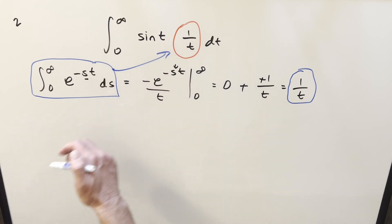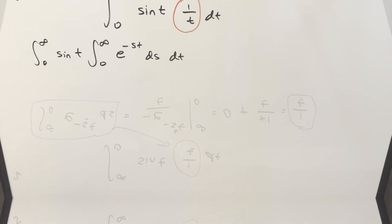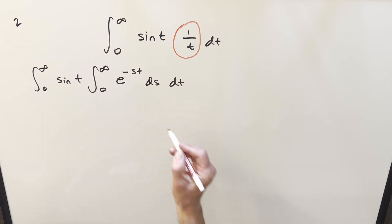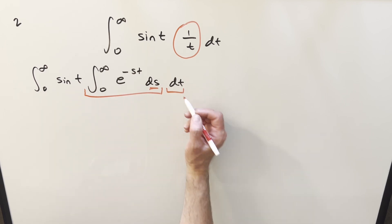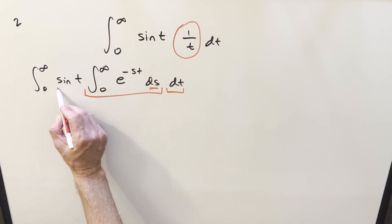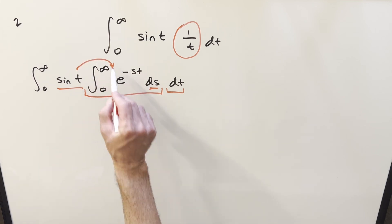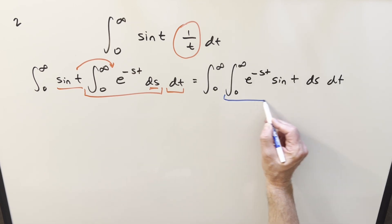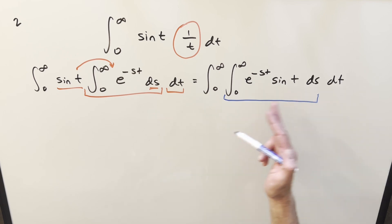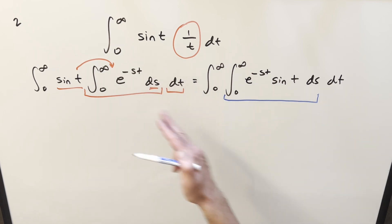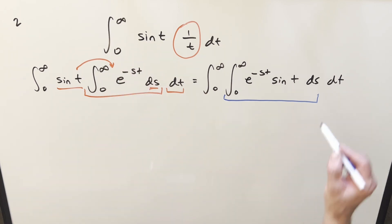We can use this to bring it inside the expression and create a double integral. So let's substitute it in for 1/t. Now that we have this written as a double integral, we need to be careful about the order: the inner integral is integrating with respect to s, and the outer integral is with respect to t. With respect to s, sine t is just a constant, so we can multiply it back inside the inner integral. Notice that if we now integrate with respect to s, we'd get right back to where we started — we'd just be going in circles.